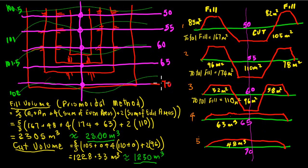So now the actual formula itself or the prismoidal method is based on this formula, which is D over 3, D being the distance between the sections. D over 3, and then A1 is the area of the first section. In this case we're doing fill, so it's the area of the fill.